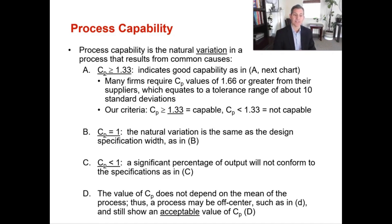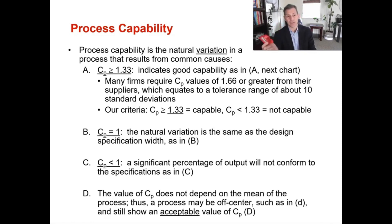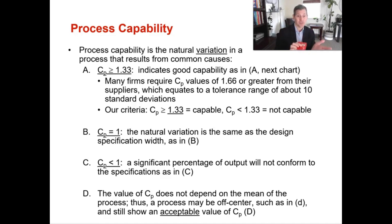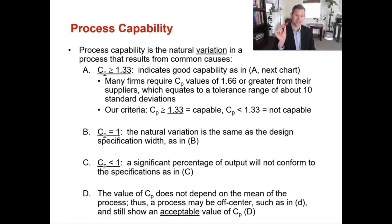The value of CP does not depend on the mean of the process. A process may be off-center and still show an acceptable value for process capability. For example, if the range of 2 from 9 to 11 is acceptable but the process is making only 4 to 6 Skittles, the process capability looks tight — varying by only 2 — but it's way off center from where it's supposed to be. So process capability alone doesn't always tell the whole story.